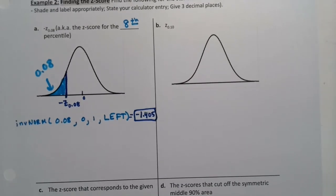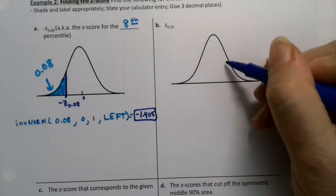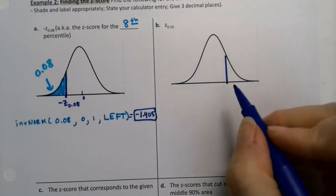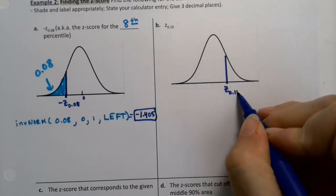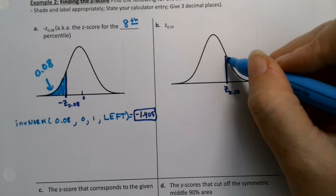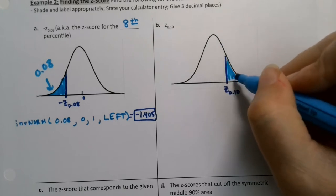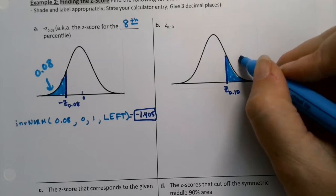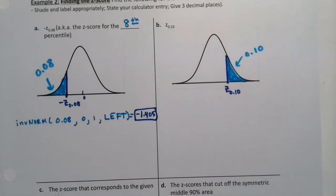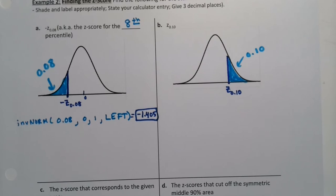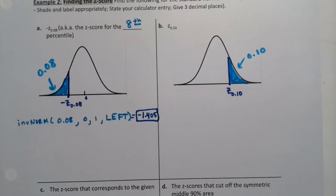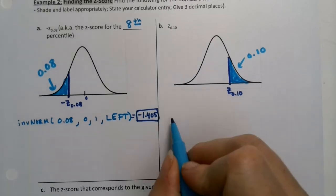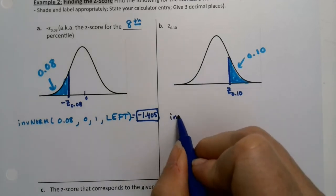Now let's find the z that has 10% over to the right — that's z.10. This area over here will be 0.10, just a touch larger than the 8% from before. If you're interested, you're finding the z for the 90th percentile, because 90% is to the left. That will come in handy for us in just a second. So I'll use inverse norm.